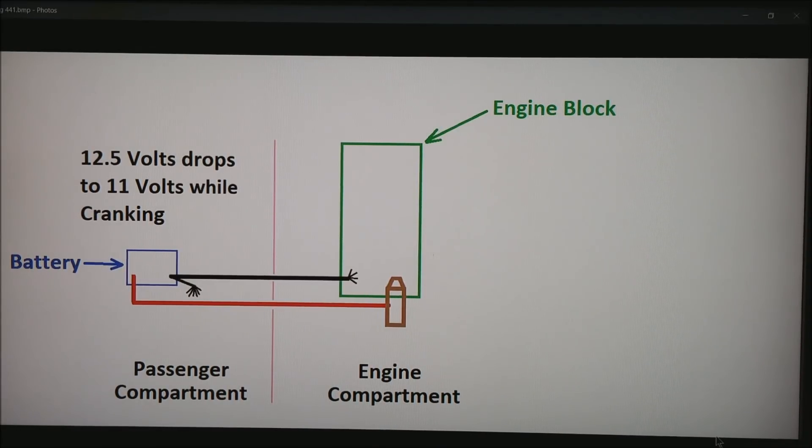So during cranking, we're probably starting with about 12.5, 12.6 volts in a fully charged battery. And racecars are notorious for dropping that voltage as the day goes on. But during cranking, your voltage at the battery itself, if you go with your voltmeter across the terminals, will probably drop to about 11 volts when cranking, even with a healthy battery.